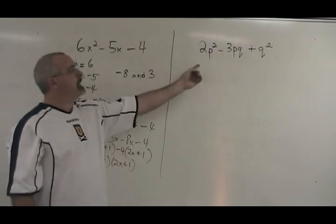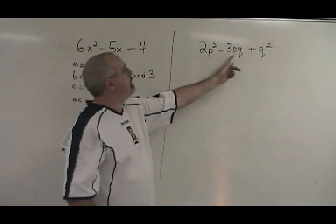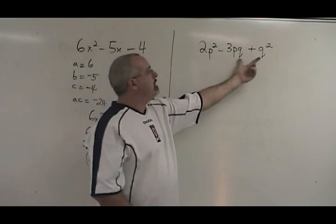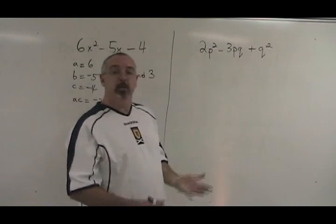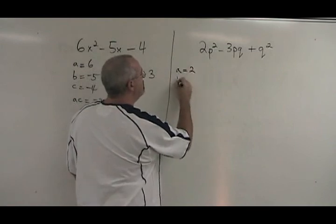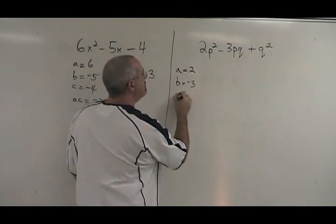Let's try that again with this other question, which has the extra letter. Just to prove that with the complex trinomial method, we can do the same thing. We ignore the extra letter until the end and we just make sure to include it in the answer. A in this case is 2. B is negative 3. C is 1.